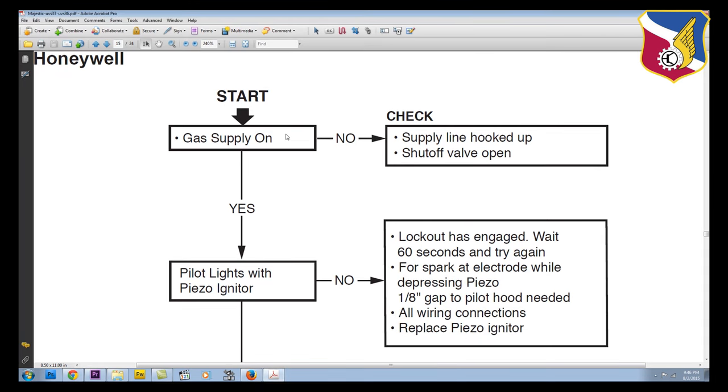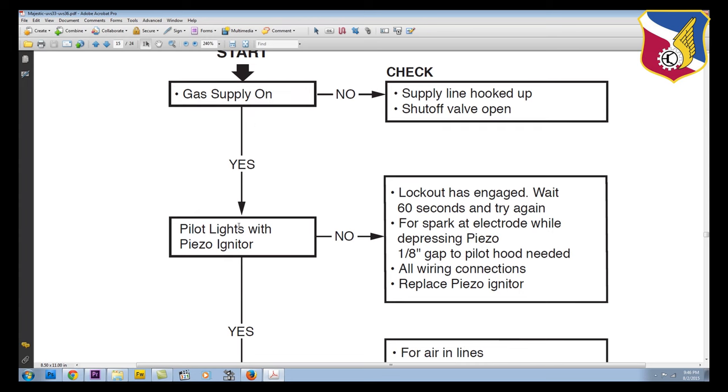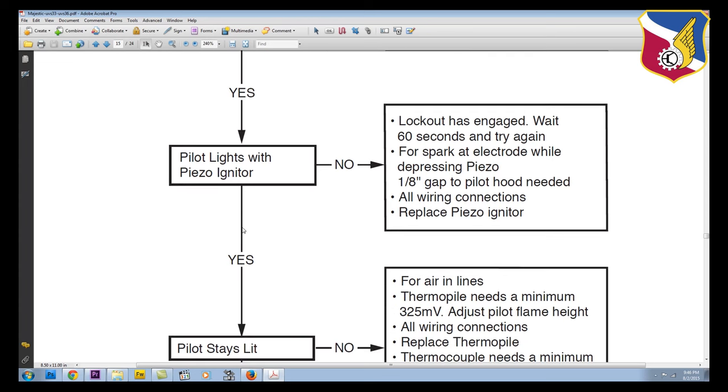So let's start out at the start of the flowchart. And as you go down the flowchart you can see the first question asks, does the gas, do you have gas coming to the unit? Now if you don't have gas it says check if you have it hooked up or if the shutoff valve is open.